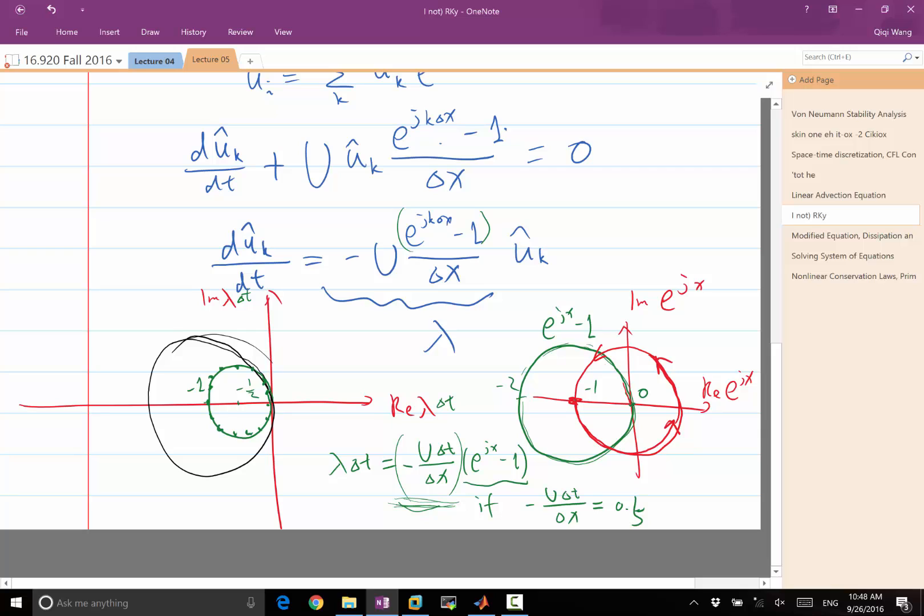This is actually within the stability region of forward Euler, which is a circle that is twice as big as this. So this is the stability region. And all my eigenvalues lie on this smaller circle, which is completely contained in this big stability region. So this is just an example of minus u times delta t over delta x equal to 0.5. And in fact, as long as this number lies in between 0 and 1, the green circle is going to be contained in this black circle.